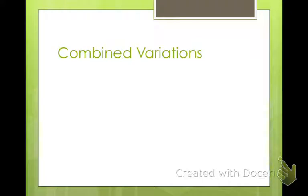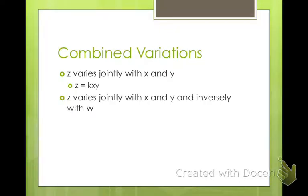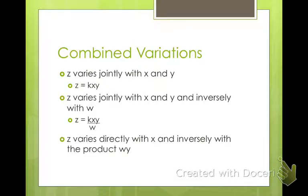Alright, we also have combined variations. So these are going to be jointly. So z varies jointly with x and y. So what that means is it's a direct variation with both x and y. So z equals a constant times x times y. So jointly means direct. And if z varies jointly with x and y and inversely with w, that means we still have z equals kxy, but then the inversely part is divided by w. Directly with x and inversely with the product w and y is z equals kx divided by wy. So jointly means direct variation, inversely means inverse. And don't forget to use your constant. A lot of students, when they do these, they forget to include the k.